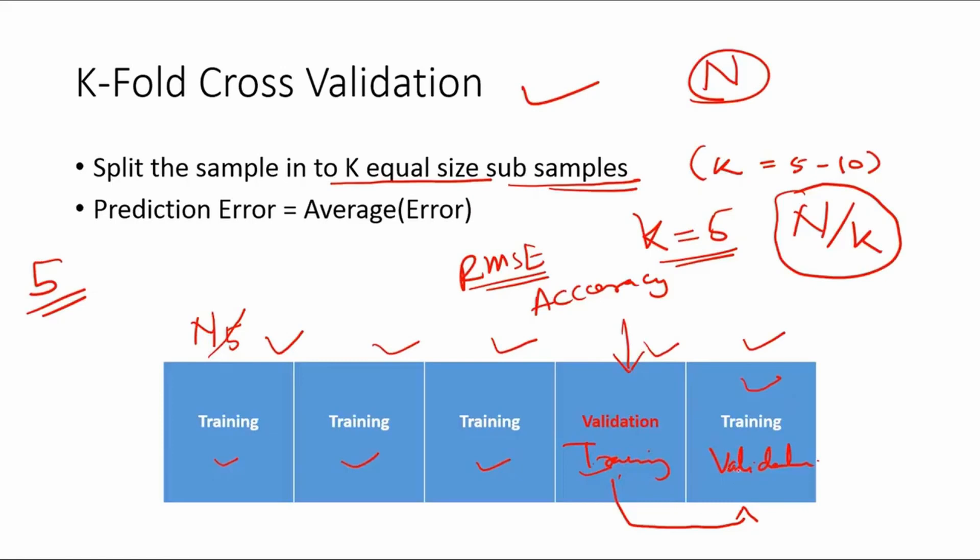Validation sample could be this one, this one, this one, or this one and this one. And every time you will get an error rate while doing the validation for each of the samples.